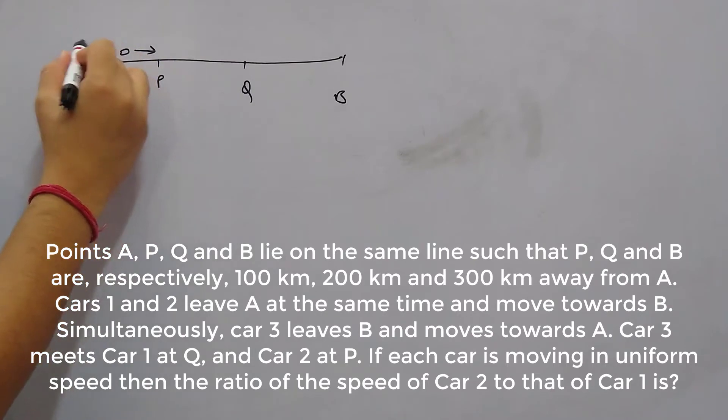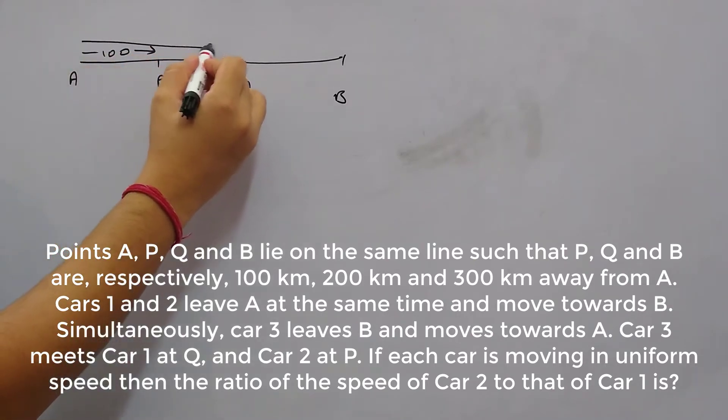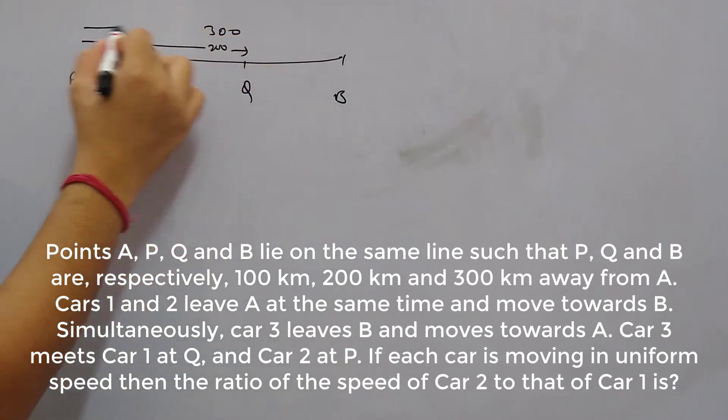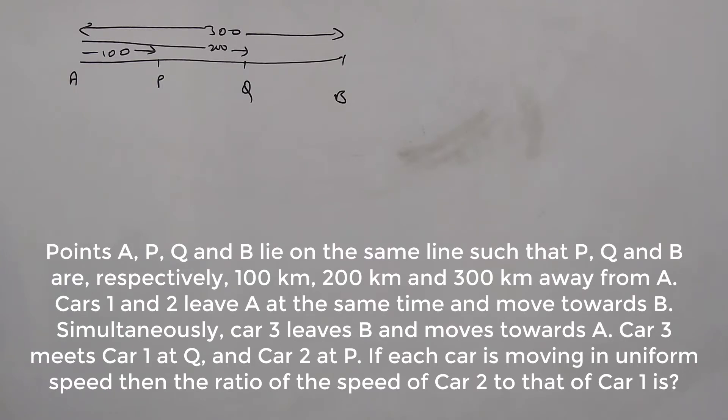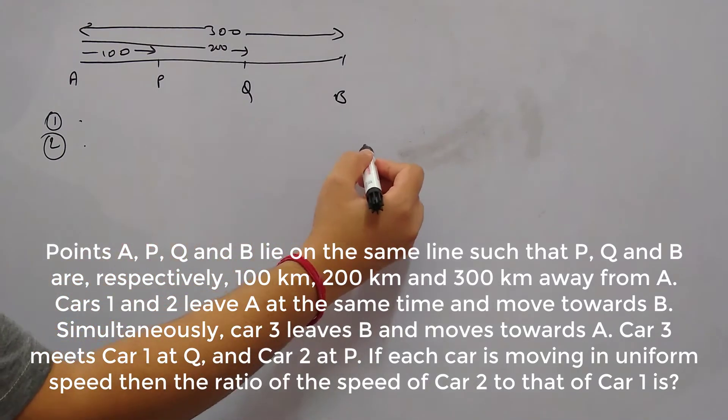Cars 1 and 2 leave A at the same time and move towards B. There are two cars, 1 and 2, starting from A and moving towards B. Simultaneously, car 3 leaves B and moves towards A. So here is car 3 at B moving towards A.